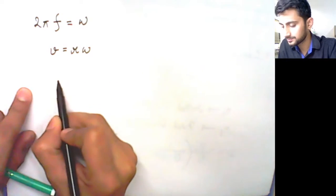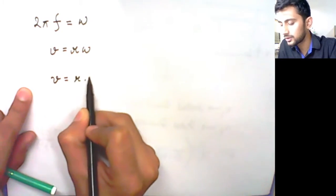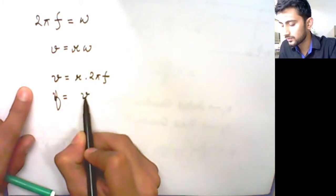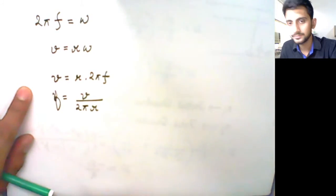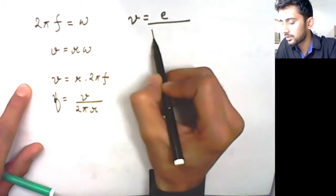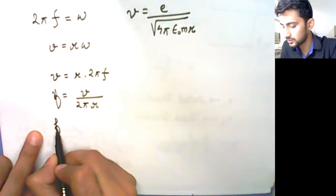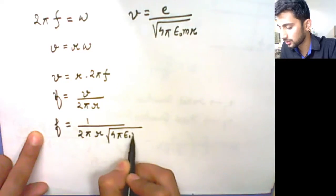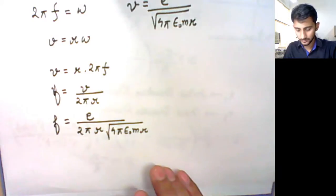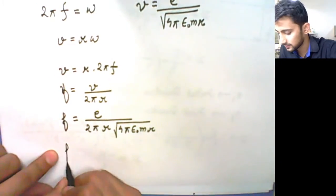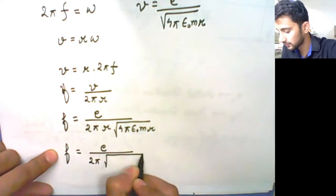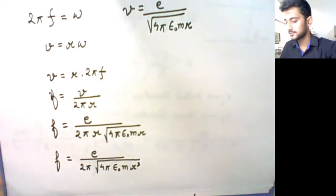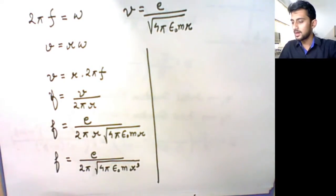From here what we did was that we can simply put v equals r into 2πf, or I can simply say that the frequency f equals velocity upon 2πr. As I told you, velocity can be written as e upon the square root of 4πε₀mr. Using this, we wrote f as e divided by 2πr times the square root of 4πε₀mr. This r can go inside the root, so it becomes e upon 2π times the square root of 4πε₀mr³.